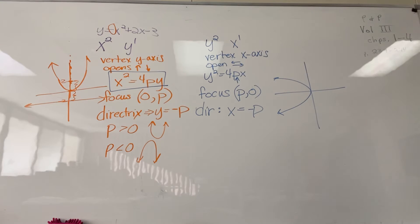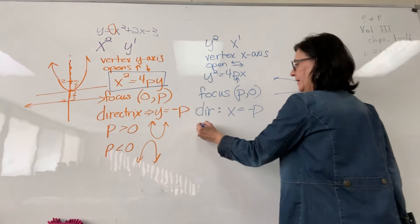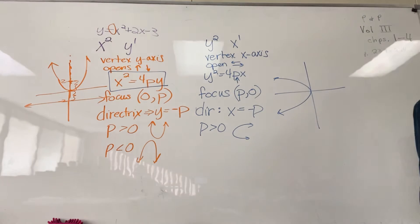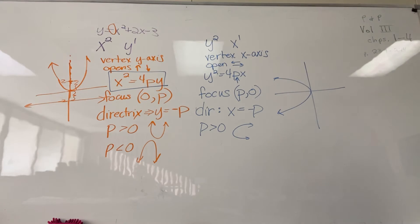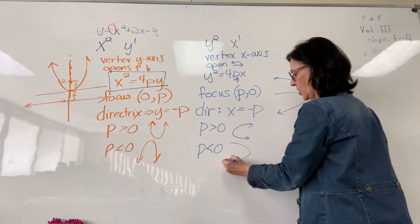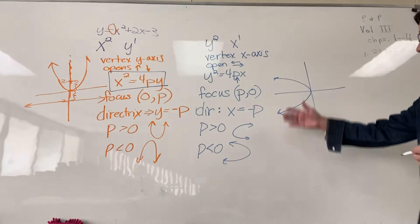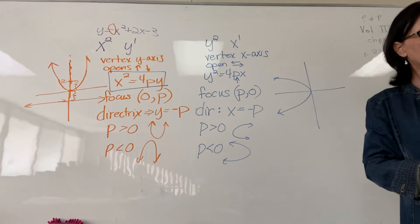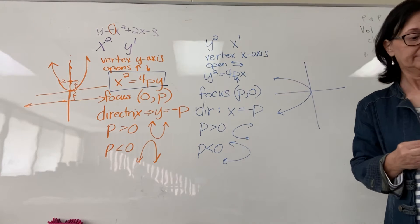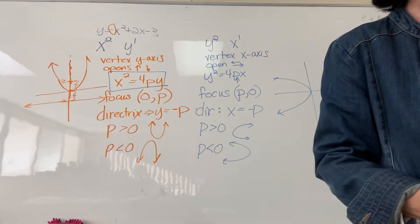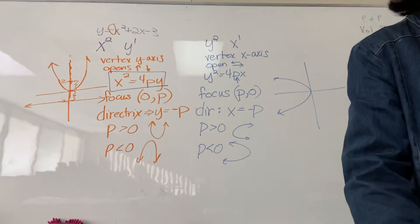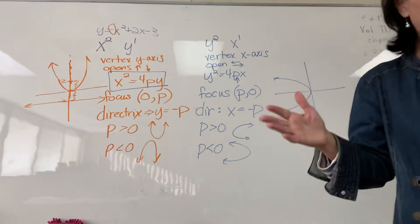If p is greater than 0, it's going to open to the positive x-axis — so it will open to the right. If p is less than 0, it's going to open to the negative x-axis — p is negative. So how do we figure all this out? Look at Example 1.